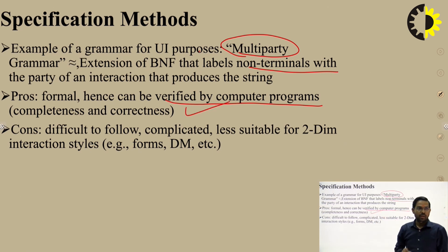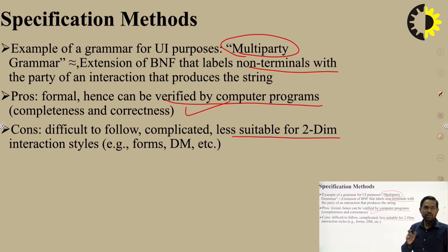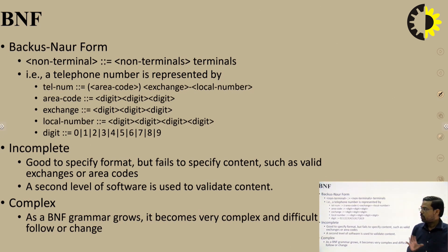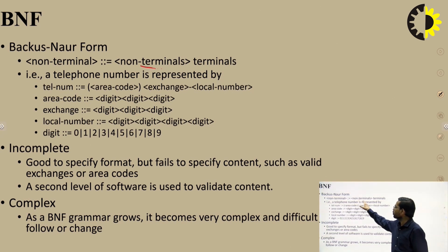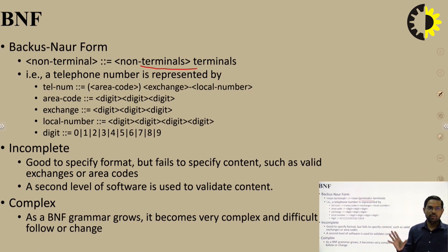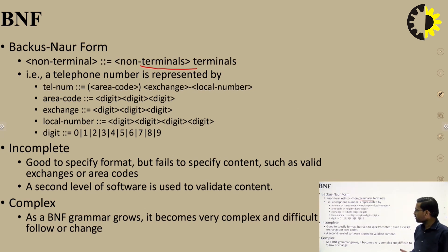These grammars allow for correctness and completeness verification by the computer programmer, but they can be difficult to follow and complicated, and less suitable for two-dimensional interaction styles. BNF — Backus-Naur Form — uses non-terminals or combinations with terminals. For example, a telephone number equals an area code, exchange code, and local number, each being combinations of digits (0–9).